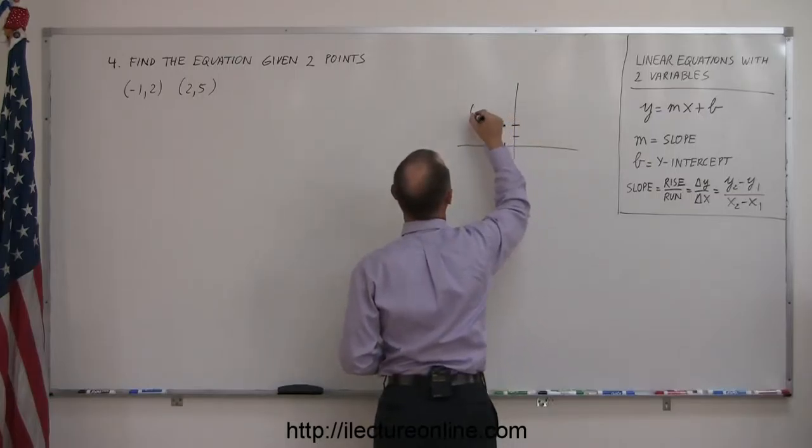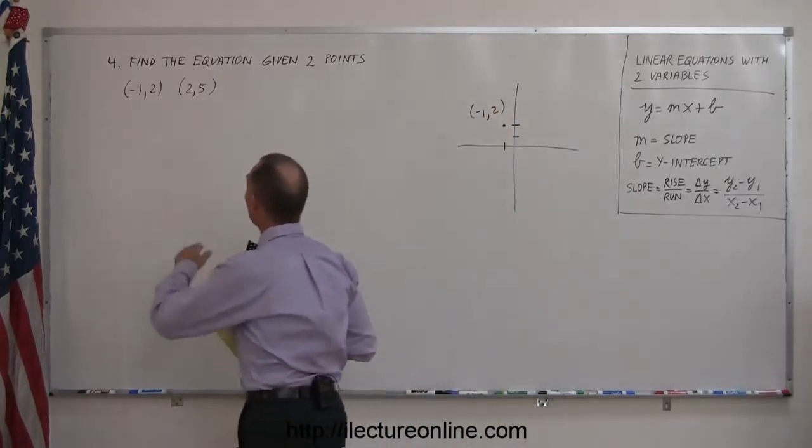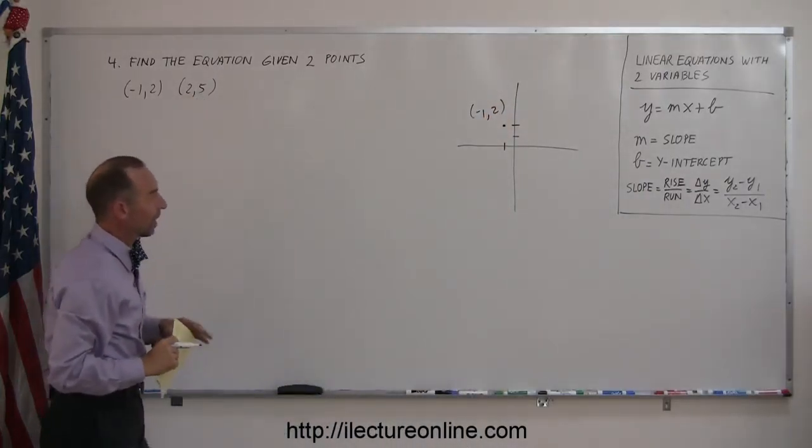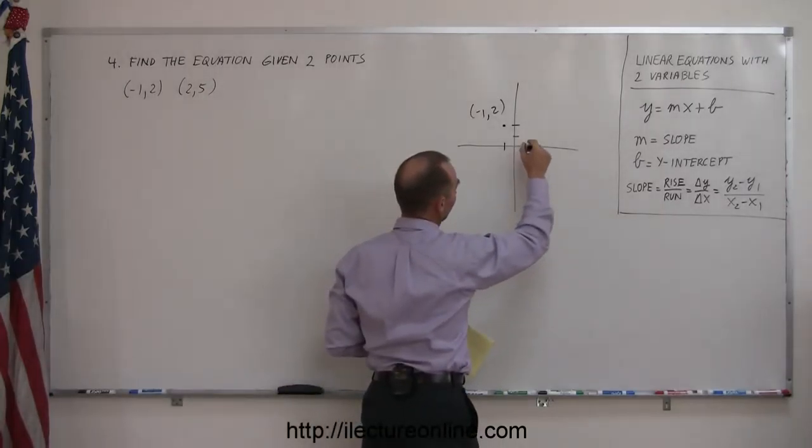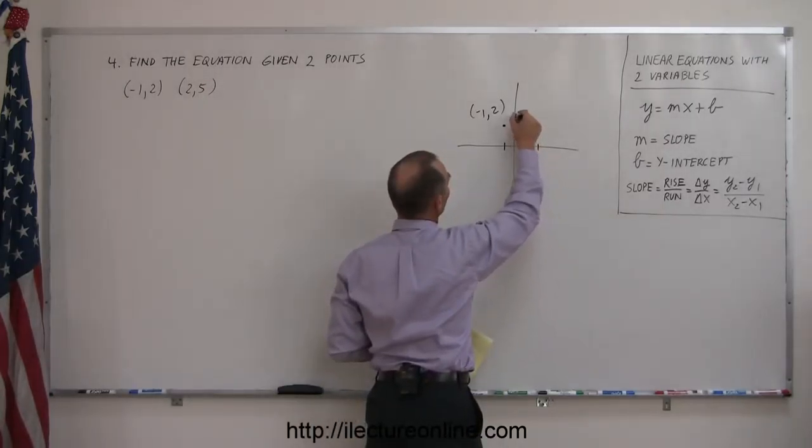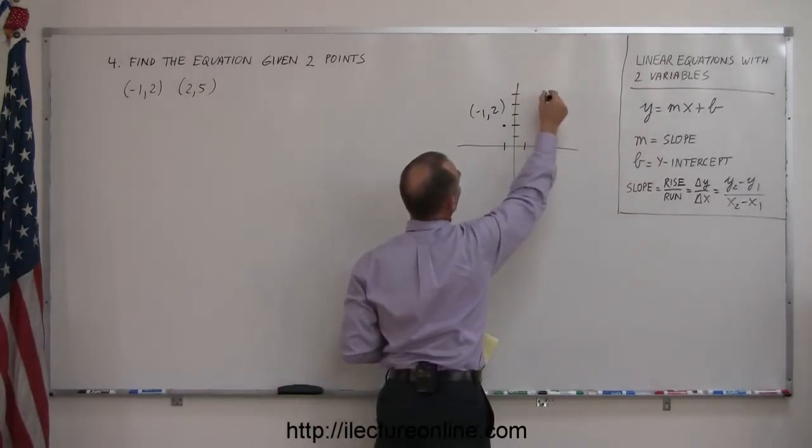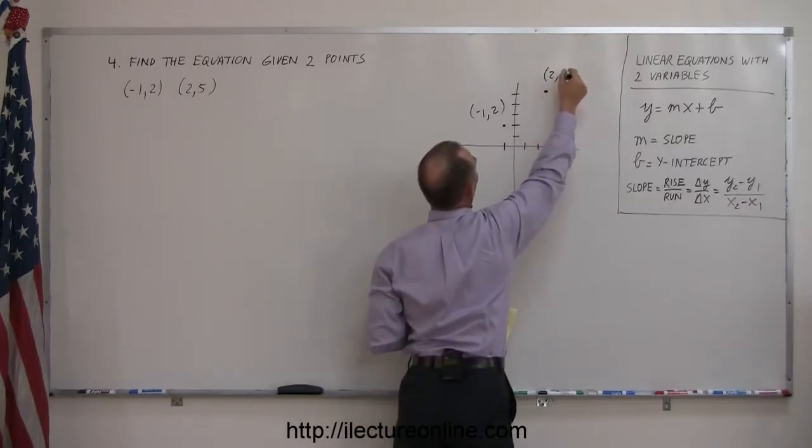Let's find these two particular points: x equals negative 1, y equals 2, there's negative 1, 2. The other point, x equals 2, y equals 5. So 2, 3, 4, 5, where those two meet, right there, that's the point 2, 5.